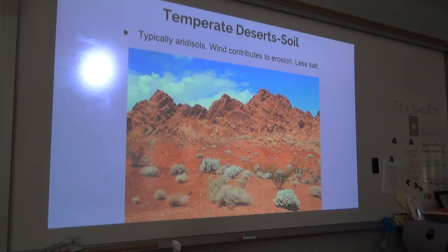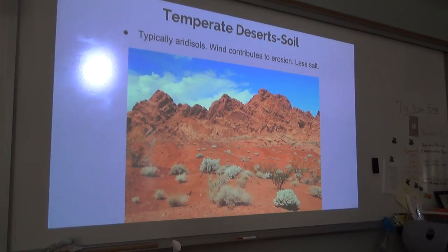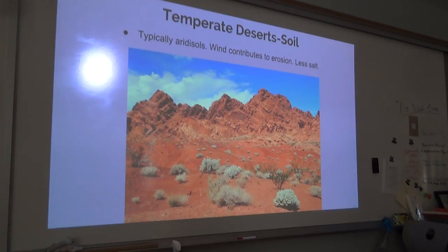Soil varies by location, ranging from fragmented rock to sandy. Typically it is aridisols because they're in a desert, so there's not a lot of moisture, making it very dry. Wind sweeps away the sandy topsoil to reveal rock below, contributing to erosion. Compared to other deserts, the soil of temperate deserts has a lower salt concentration.